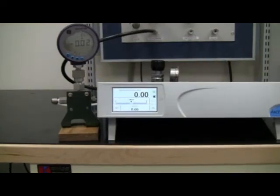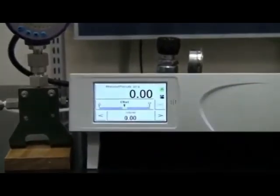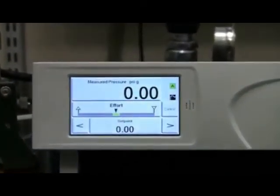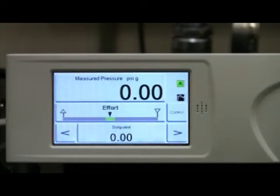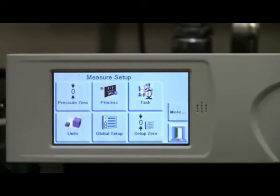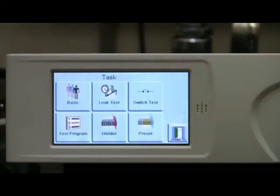PACE 5000 includes a variety of built-in features to make the process of performing different pressure calibration tasks easier. So far, we have been operating in basic mode where we enter the set point value one point at a time. Alternatively, we can select from various other tasks such as performing a leak test, calibrating a pressure switch, test program which we review in a minute, divider which allows us to select a minimum and maximum pressure with evenly spaced intervals, and the preset that allows us to assign a custom sequence of pressure values that may not be evenly divided.